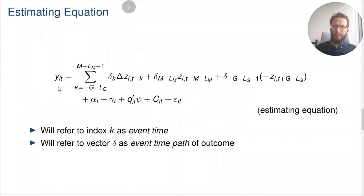This is the resulting estimating equation. We have our outcome YIT, and we'll regress that on a sum of first differences of the policy variable ZI at time T minus K, interacted with coefficients delta K. And the sum goes from minus G minus LG to M plus LM minus 1. We also have a couple of components here that we'll call the endpoints. This is the right-hand side endpoint and is the coefficient delta M plus LM interacted with the level of the policy variable at time T minus M minus LM, and we also have an analogous term for the left-hand side coefficient here. We will refer to the index K as event time, and we will refer to the vector delta as the event time path of the outcome. This vector delta is going to collect these coefficients delta K plus the coefficients on the endpoint terms.